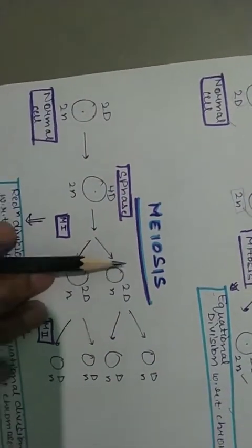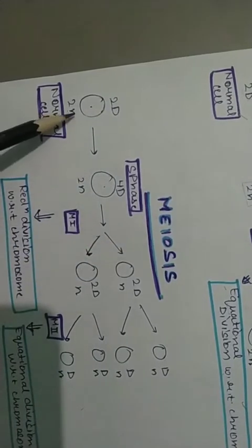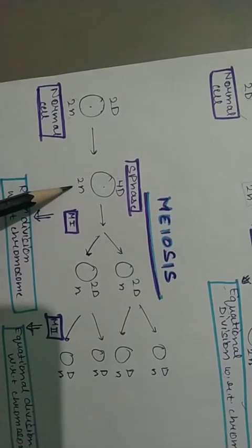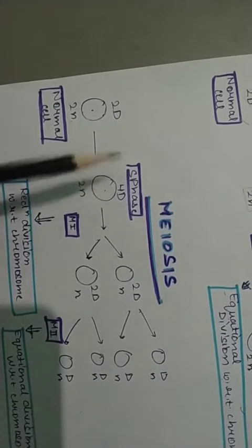Ab meiosis ke andar dekhte hai ki kya hota hai. Meiosis ke andar normal cell ke paas wahi 2n 2d hai. S phase ke andar chromosome number to change nahi hoga, S phase ke andar DNA amount change hoga, to yeh 2d se 4d chala gaya.